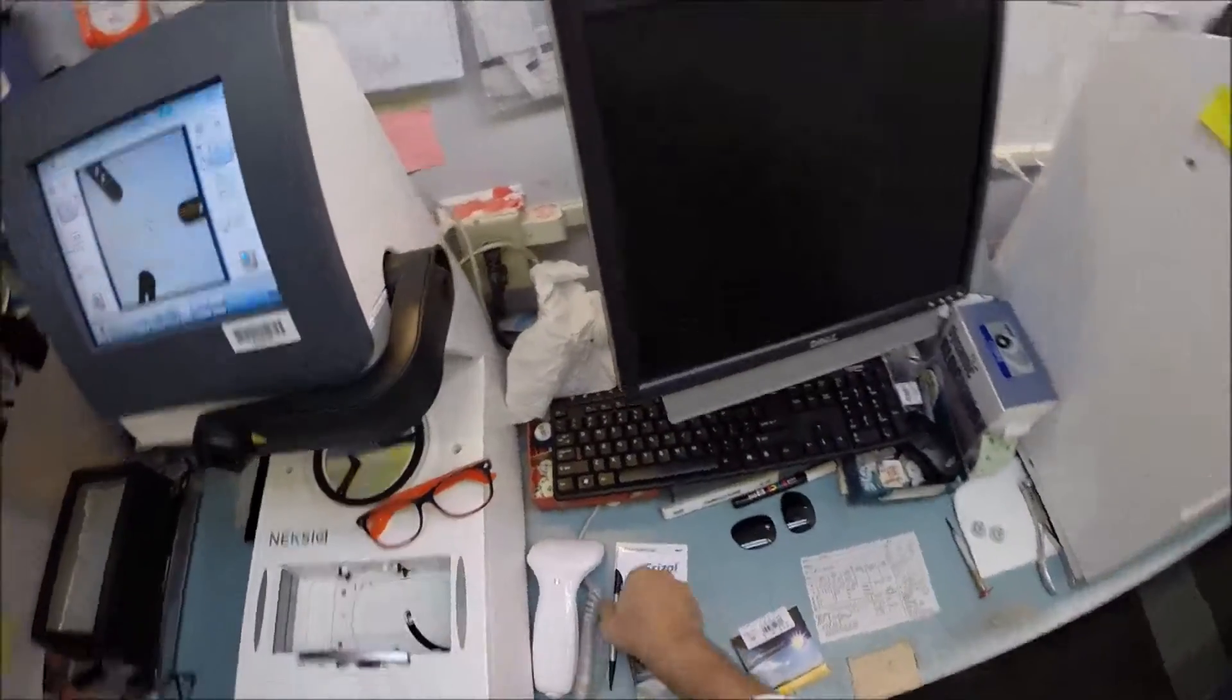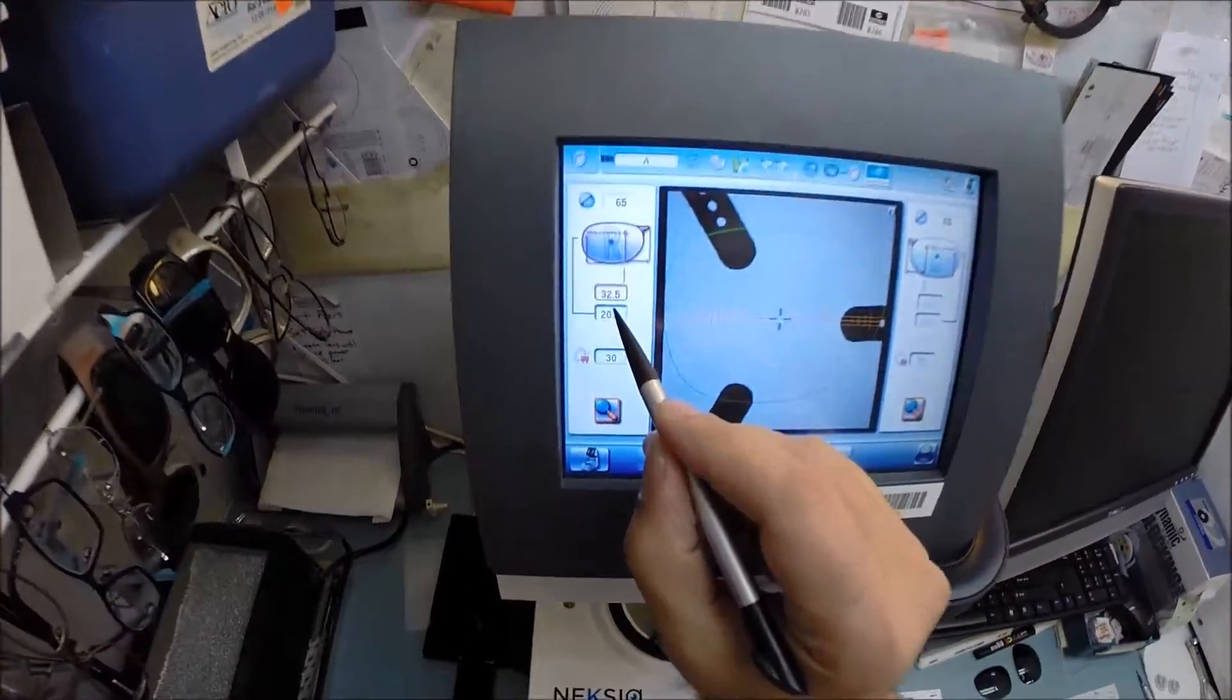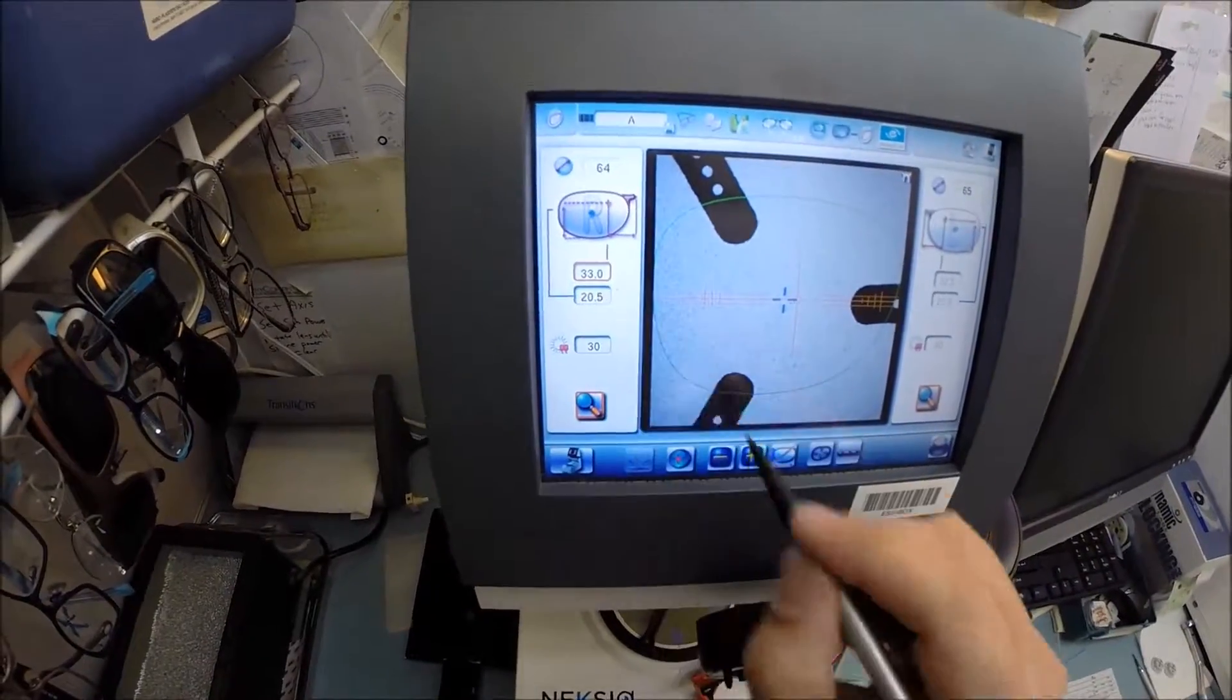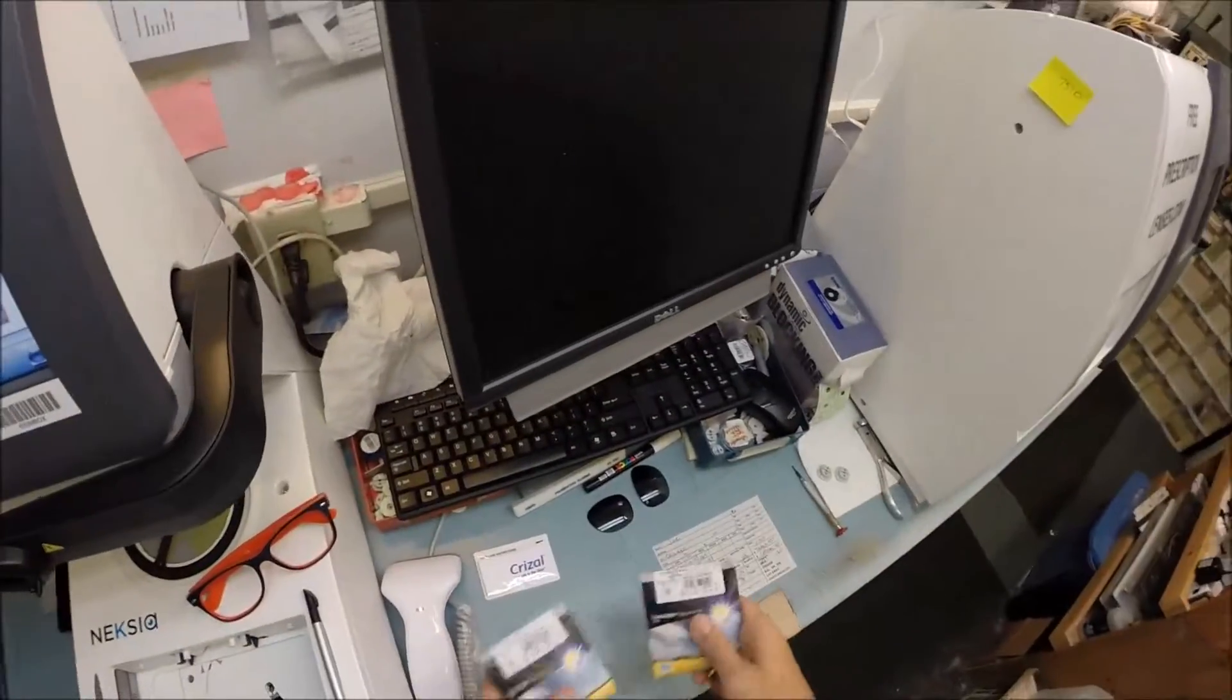Let's go ahead and get the pupillary distance set. Yours is 33.5 in both eyes. It automatically starts at 32.5, so I'm going to hit this plus button until that number gets up to 33.5. We are good to go.